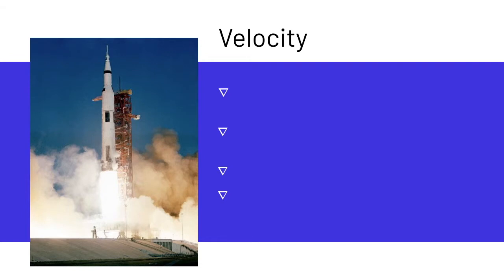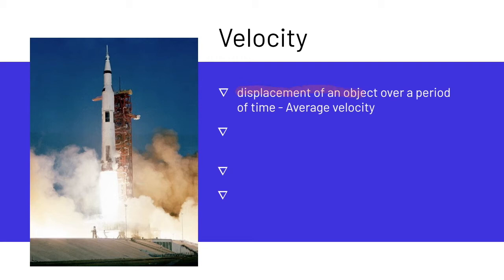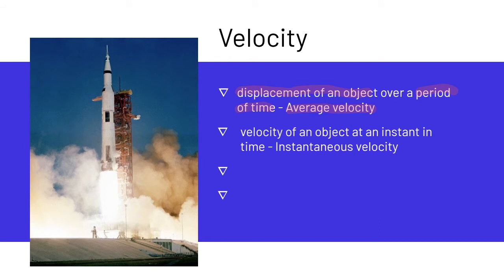So how do we define velocity? Velocity is the displacement of an object over a certain period of time, and we call that the average velocity. The velocity of an object at an instant in time is called the instantaneous velocity. For example, if you are driving a car at 60 miles per hour north, and you look at your speedometer at that moment — that's the instantaneous velocity. Velocity is a vector quantity, so it's important that you have both the speed, or the magnitude of velocity, as well as the direction.